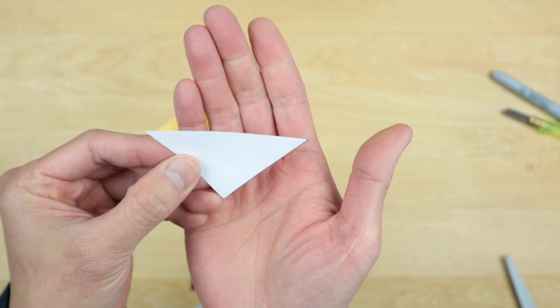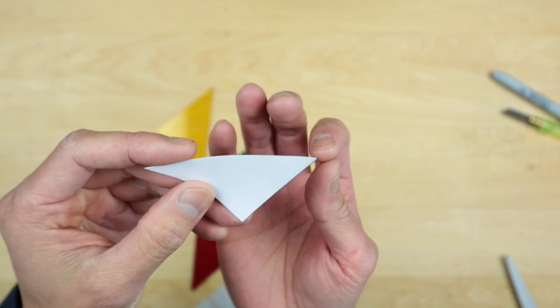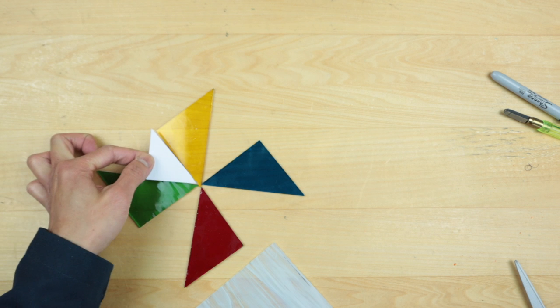And I pretty much just cut it right on the inside of the line, just a little bit smaller. Once it's traced, it's going to grow on you a little bit.